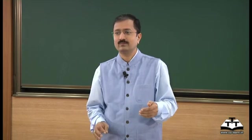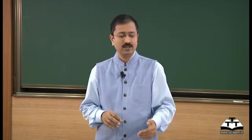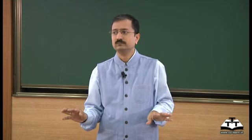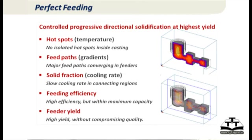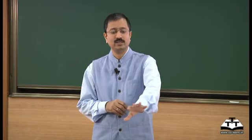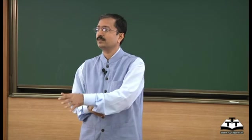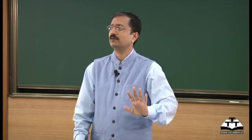The third consideration is a slow cooling rate so that feeding can take place comfortably everywhere. Rapid cooling does not promote good feeding — it may give better microstructural properties but may not give good feeding characteristics. We also need to ensure that feeding efficiency remains high and yield remains high. These are our five goals of perfect feeding, and the next lesson will cover how to achieve them by different methods of feeder design.